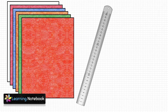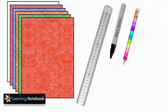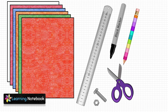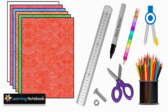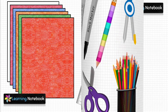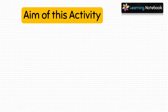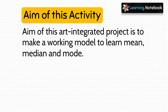For this activity we need a few colorful thick sheets, a ruler, a black marker pen, a pencil, a pair of scissors, a compass, a knotting bolt, and some pencil colors or crayons. The aim of this art integrated project is to make a working model to learn mean, median, and mode.